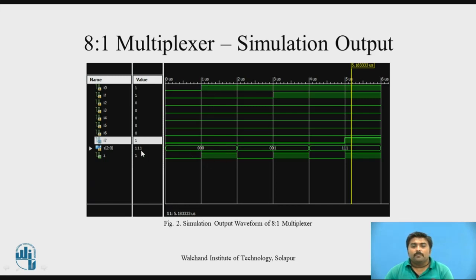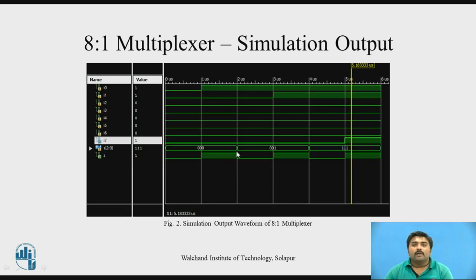If I now change the select lines from 000 to 001 while i0 is still 1 and the remaining inputs are 0, the output gets connected to i1. Since i1 is 0, the output becomes 0. When the select line is still 001 and I make i1 equal to 1, the output changes to 1. This is how you can verify the VHDL module you created for your design using simulation waveforms.